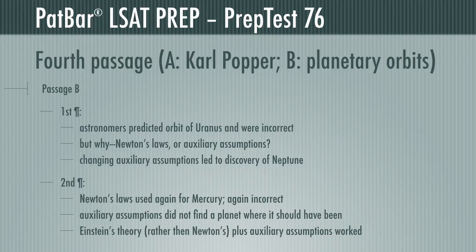Your summary of Passage B may require a bit more detail, but it must be as brief as possible or you'll take too much time. For paragraph 1, astronomers predicted the orbit of Uranus and were wrong, then worked to determine exactly why. They made changes based on what had to be and found Neptune. The second paragraph shows similar methods and results for Mercury, but did not lead to the same finding. Astronomers then used Einstein's theory rather than Newton's to find the answer. If you have yet to read the passage and craft your own summaries, pause the video here and resume when ready.